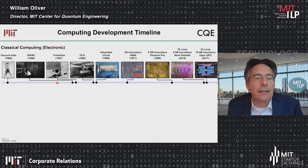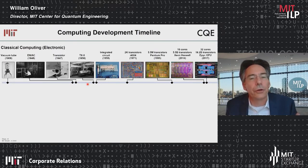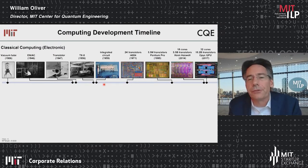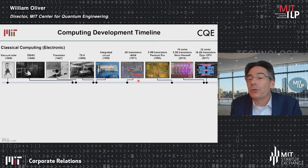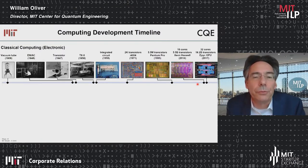Within about 10 years, MIT Lincoln Laboratory had built the first fully transistor-based computer called TIXO. These transistors were soldered together and used magnetic core memory. Around that time, the first integrated circuits were developed at Texas Instruments. It was yet another 15 to 20 years before we had the first chips we would recognize today, built by Intel — the 4004 with 2,000 transistors in the early 70s. It would take another 25 years to get to the Pentium Pro with millions of transistors, and then another 20 years to get to multi-core processors and GPUs with billions of transistors.